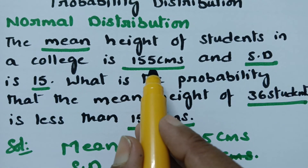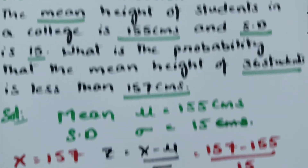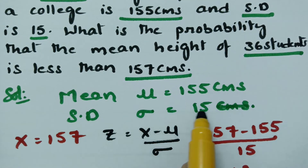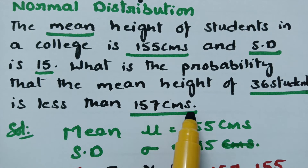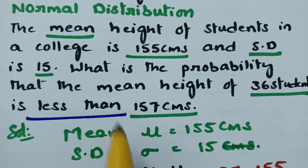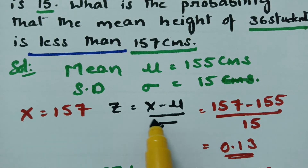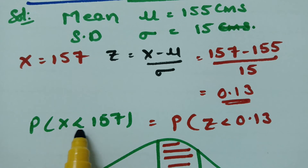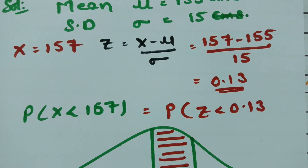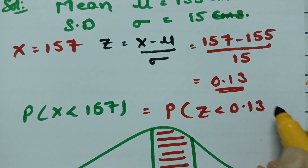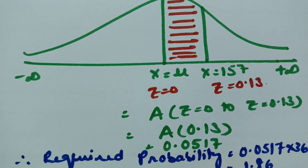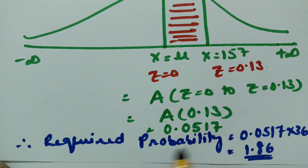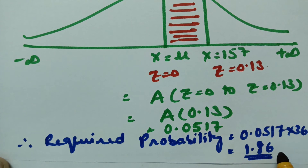To summarize: the mean height of students is 155 centimeters and sigma is 15. We need P(mean height of 36 students < 157). When x = 157, z = 0.13, so P(Z < 0.13). The area between z = 0 and z = 0.13 from the table is 0.0517. The required probability for 36 students is 0.0517 × 36 = 1.86.